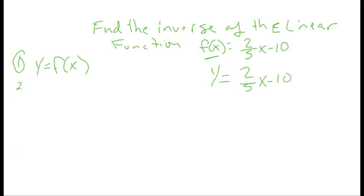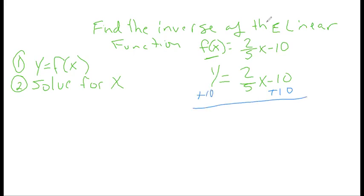The second thing we're going to do is solve for x. In order to do that, I'm going to start by getting rid of this minus 10. I'm going to add that 10 over. When I add that 10 over, I'm going to have y plus 10 equals two-fifths x.